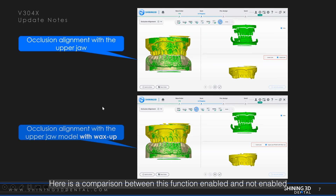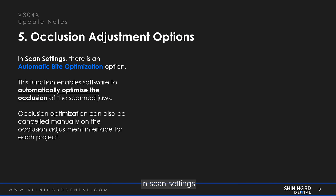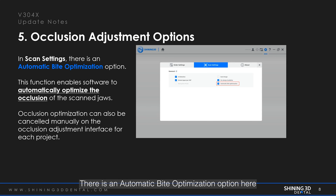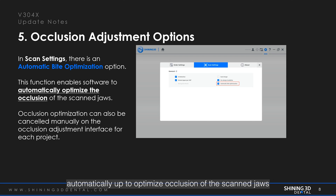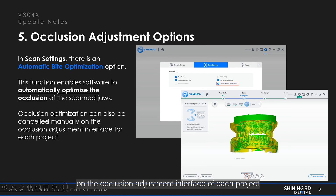Here is a comparison between this function enabled and not enabled. The fifth upgrade is occlusion adjustment options. In scan settings, there is an automatic bite optimization option. This function enables the software to automatically optimize the occlusion of the scanned jaws. However, if we don't want this automatic optimization for the occlusion, we can cancel this function manually on the occlusion adjustment interface of each project.